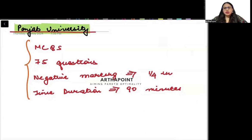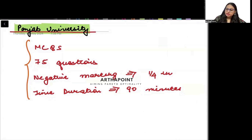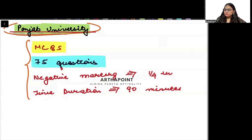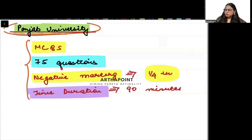Good afternoon everyone. Today we are going to talk about the admission process and the exam at Punjab University. Punjab University will have an MCQ based exam with 75 questions. There will be negative marking of 1/4 and the time duration of this exam will be 90 minutes.